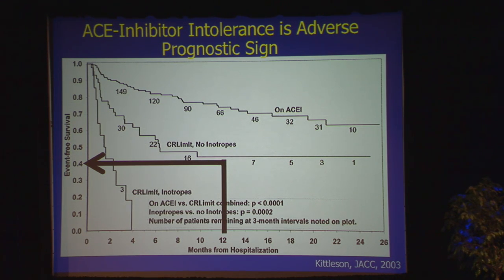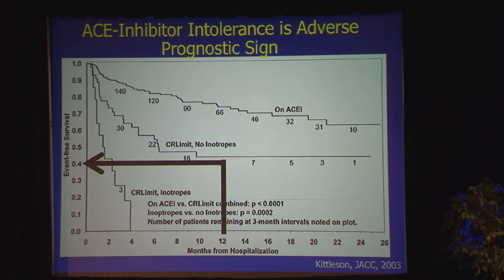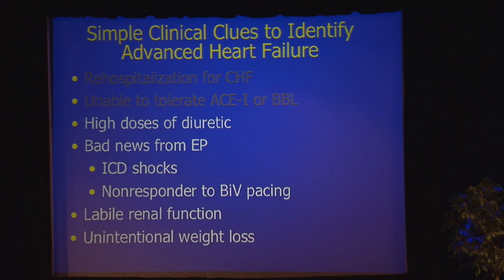Before you see those data, you probably would stop the ACE inhibitor without a second thought. But in reality, if you have to pull the ACE inhibitor off your patient — not because of cough, not because of angioedema, but because of hypotension or renal dysfunction, and you have to discharge them off ACE inhibitor — that is a seminal event in that patient's life and identifies a very high-risk population that you should consider referring on.